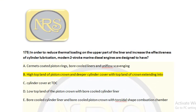Question number 175. In order to reduce the thermal loading on the upper part of the liner and increase the effectiveness of cylinder lubrication, modern two-stroke marine diesel engines are designed to have: option A, ceramic-coated piston rings, bore-cooled liners, and uniflow scavenging; option B, high top-land piston crown and deeper cylinder cover with the top land extending into the cylinder cover at TDC; option C, cylinder cover at TDC; option D, low top-land piston crown with bore-cooled cylinder liner; option E, bore-cooled cylinder liner and bore-cooled piston crown with toroidal shaped combustion chamber. For question number 175, option B — high top-land piston crown and deeper cylinder cover with the top land extending into the cylinder cover — is the correct answer.